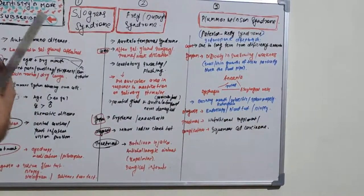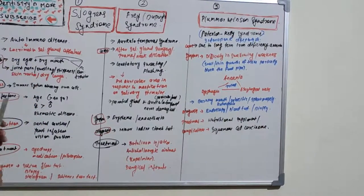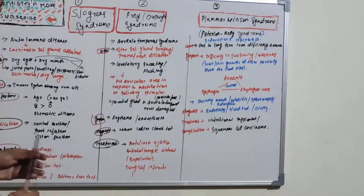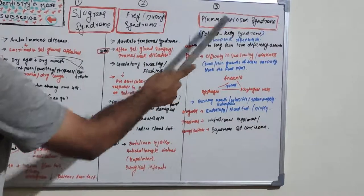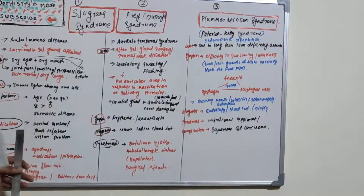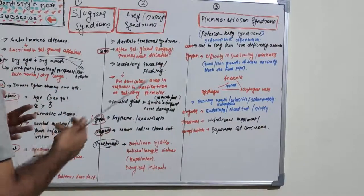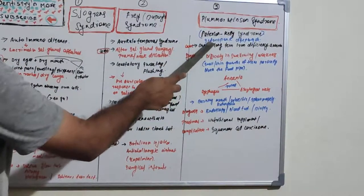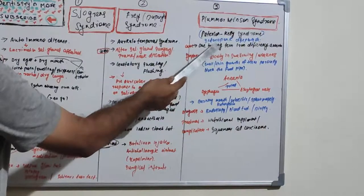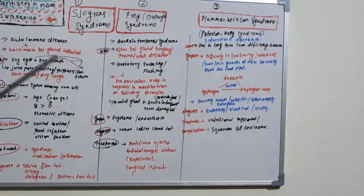In Frey syndrome, there will be pre-auricular area flushing and sweating when there is a response to mastication or salivary stimulus. When we think about particular food, there will be sweating in the pre-auricular area. That is Frey syndrome, or Dupuy syndrome, or auriculotemporal syndrome. And the third syndrome in today's session is Plummer-Vinson syndrome. It is very different, not related to these two. It is also known as Paterson-Kelly syndrome, named after the people who reported these syndromes first.